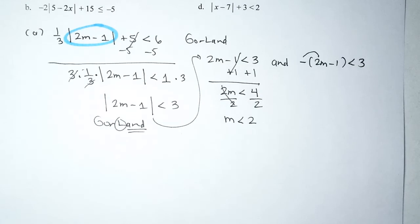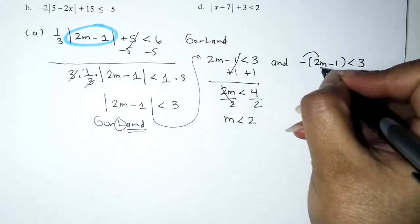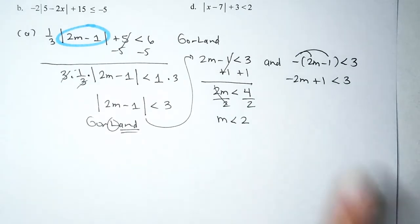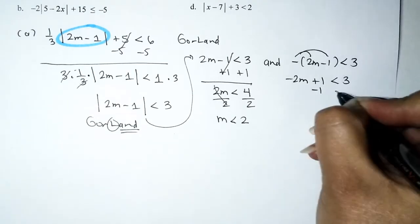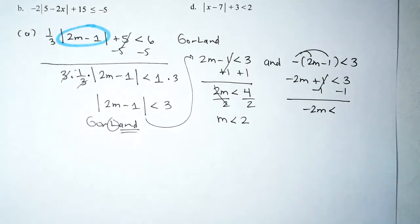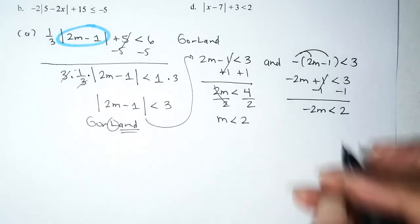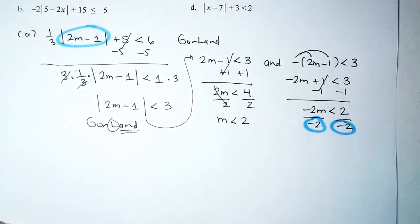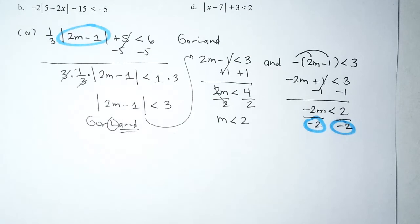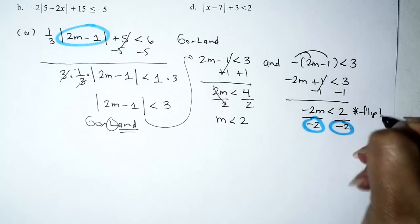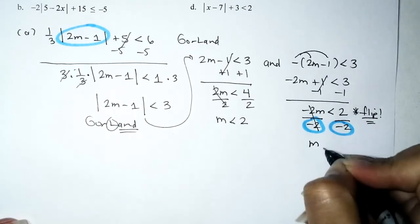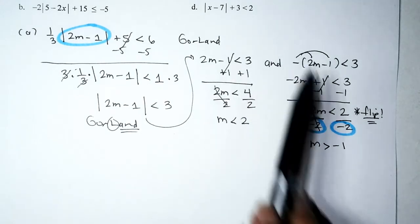Second inequality: distribute the negative — opposite of positive 2m is −2m, opposite of subtracting 1 is adding 1 — giving −2m + 1 < 3. Subtract 1 from both sides: −2m < 2. Divide both sides by −2, and because we're dividing by a negative, we flip the inequality symbol. That gives m > −1.